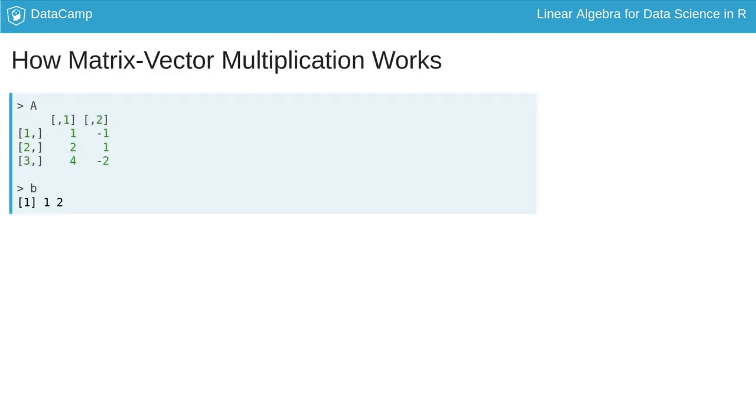Matrix vector multiplication uses the asterisk symbol sandwiched between two percent symbols in R. The asterisk symbol alone produces what is called component-wise multiplication, which is useful in practice but is not the multiplication we want in this case.